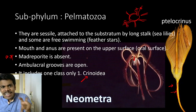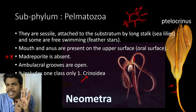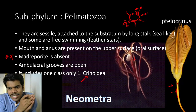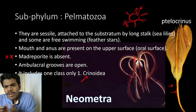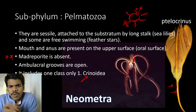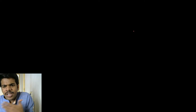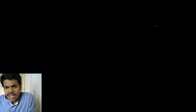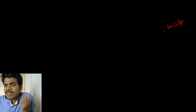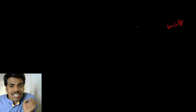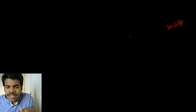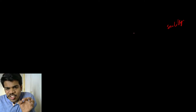Any doubt about general characters of subphylum Pelmatozoa? Madreporite is absent. Some have a stalk-like structure and some are free-swimming organisms. Mouth and anus are both present on the oral surface. It includes only one class: Crinoidea. Crinoidea has two types of organisms — those with a stalk are known as sea lilies, and those without a stalk, which are free-swimming, are known as feather stars. Feather stars' arms are biramous, and each arm has pinnules.